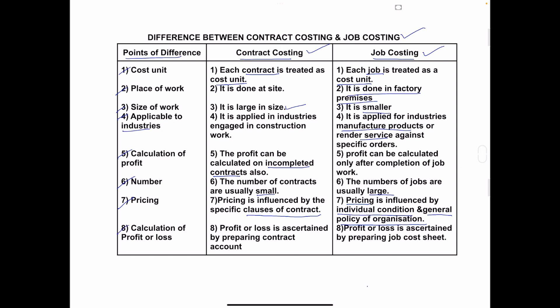Eighth and last: Calculation of Profit or Loss. In contract costing, we prepare a contract account to find out the profit or loss on each contract. In job costing, we prepare a job cost sheet to find out the profit or loss on each job.